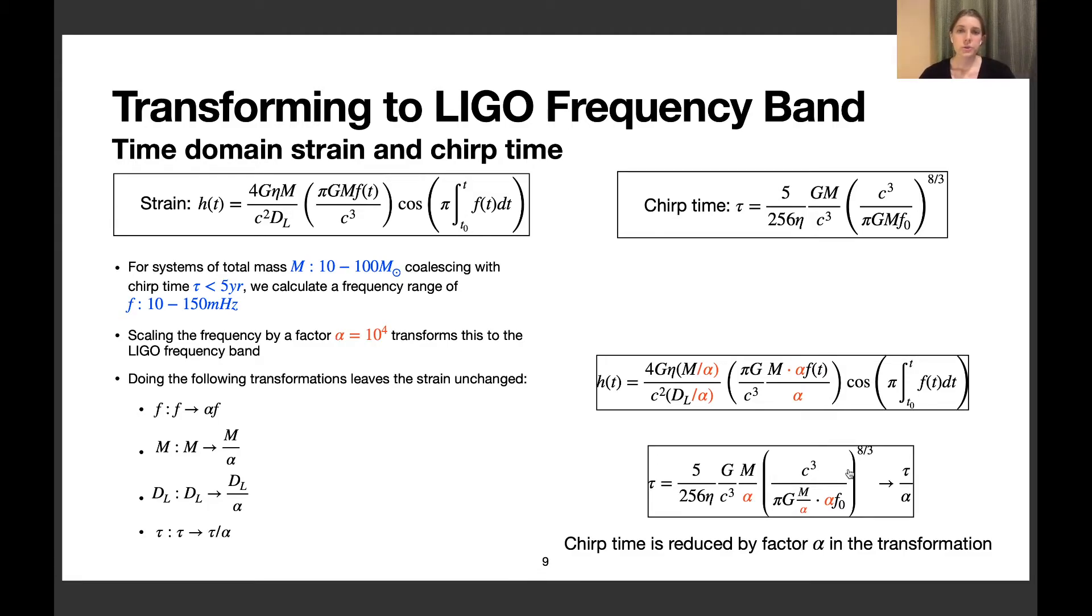To generate the template bank and bank efficiencies, we wanted to use all the code we already have for LIGO problems. To do that, we scale up the LISA problem into the LIGO band. We start with the equation for chirp time. By assuming a mass range of 10 to 100 solar masses and waveforms that merge in less than 5 years, we find that our frequency in the LISA band would be 10 to 150 millihertz.